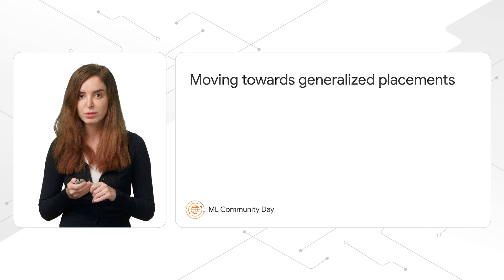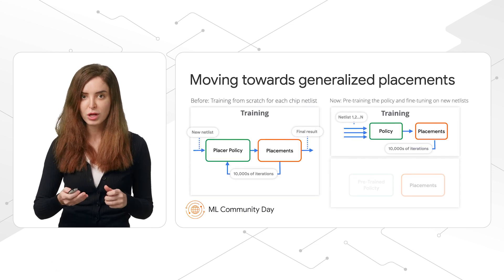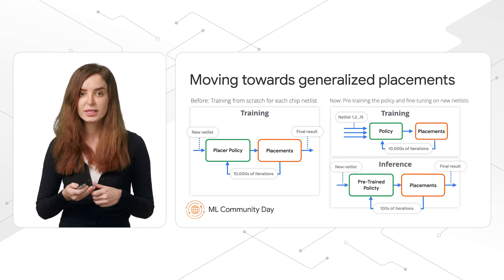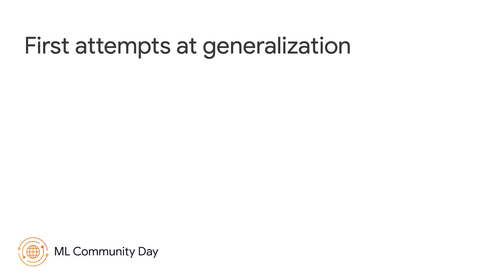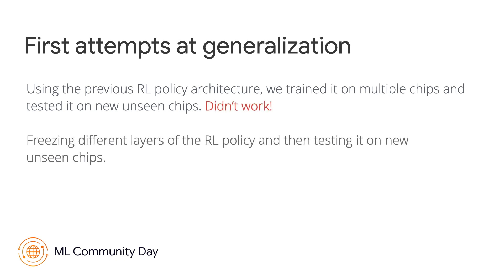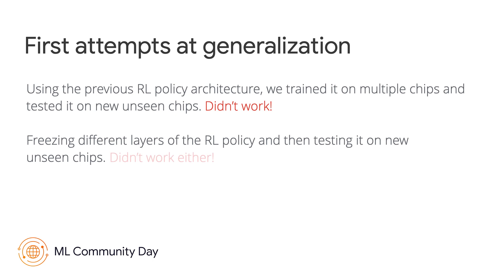One of our goals was to train policies that generalize to new, unseen chip blocks. We want to train policies on a set of chip blocks and, once trained, use them to quickly generate high-quality placements on unseen chip blocks. We started with the most basic approach: training a policy on a family of chips and applying it directly to a new test chip — that didn't work well. We also tried freezing different layers of the policy and fine-tuning on the new chip block, and that didn't work either.